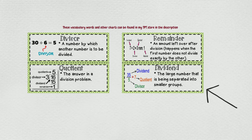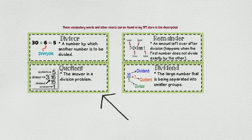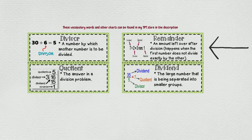Our second vocabulary word is dividend. Dividend is the large number that is separated into smaller groups. Our quotient is the answer in a division problem, and the remainder is the amount left over after dividing.